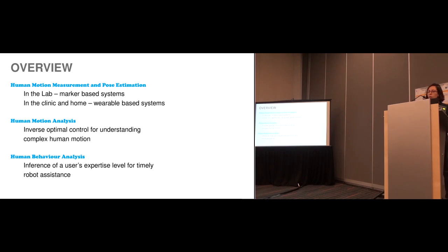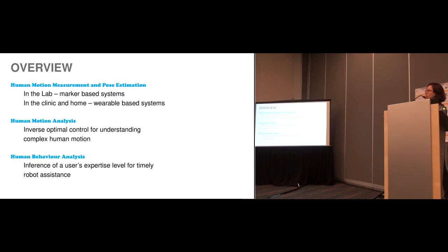In the first part, we consider two settings. We have the lab setting, which is a very controlled environment with larger spaces, and because of this we can use marker-based motion capture systems. These systems can give us very accurate measurements, but they also have issues we need to take into account when doing estimation. We then consider the clinic and home setting, where since we don't have the same space and there are other constraints, we consider body-worn sensors, and we show how the work done for marker-based systems can also be applied for sensors such as IMUs.